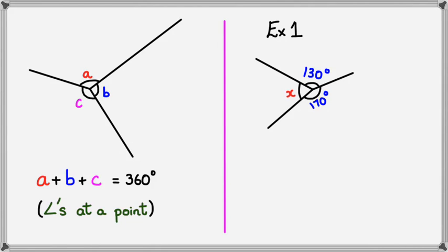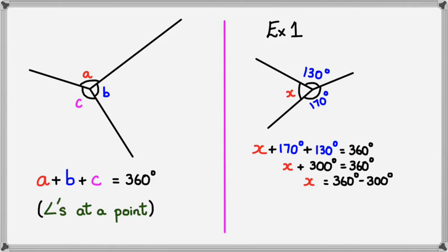In the first example, we've got three angles: X, 130, and 170. We know that angles at a point add up to 360 degrees, so angle X plus 170 plus 130 equals 360 degrees. We take away 300 from 360 and end up with X equals 60 degrees. Don't forget to write your reason, which is angles at a point.